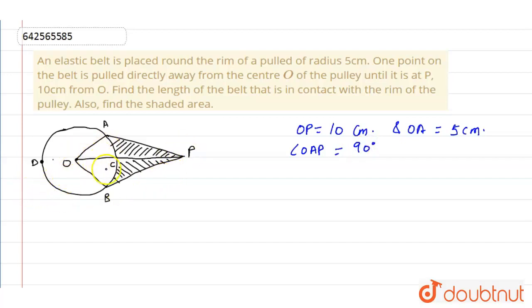So we can apply the cos theta. If we take this as theta, this is 90 degrees, so we can apply cos theta to this triangle. This will be OA upon OP, so OA is 5, OP is 10, so 1 by 2.